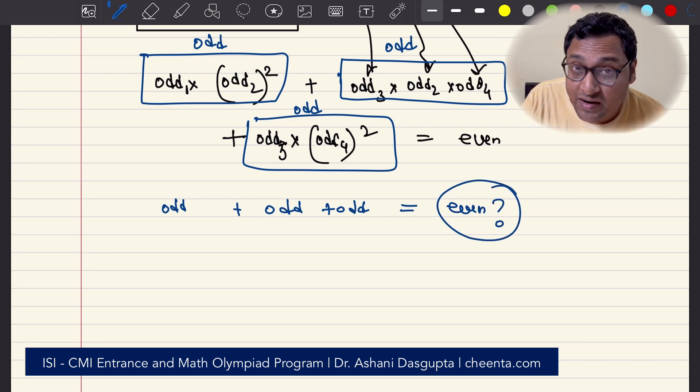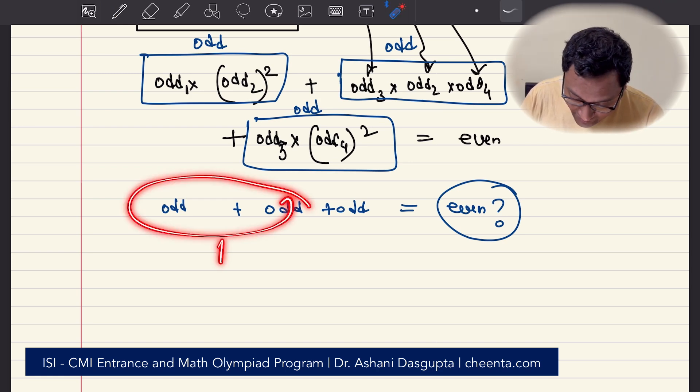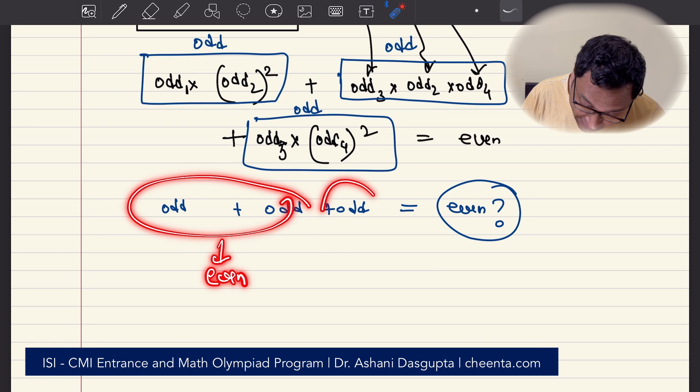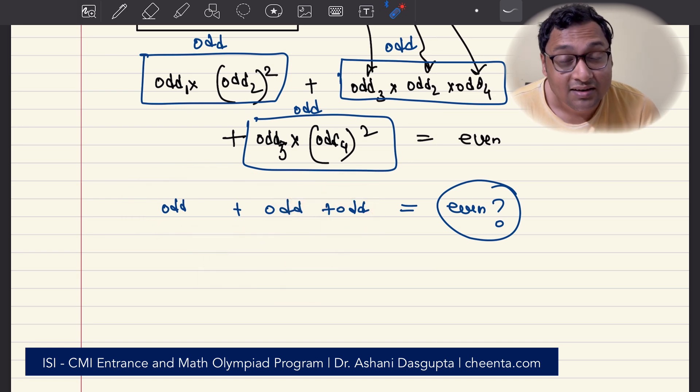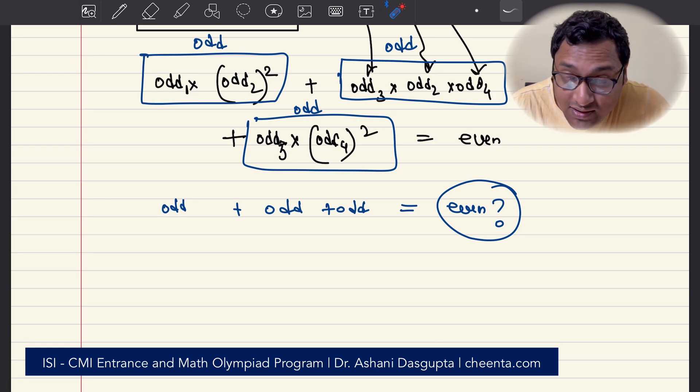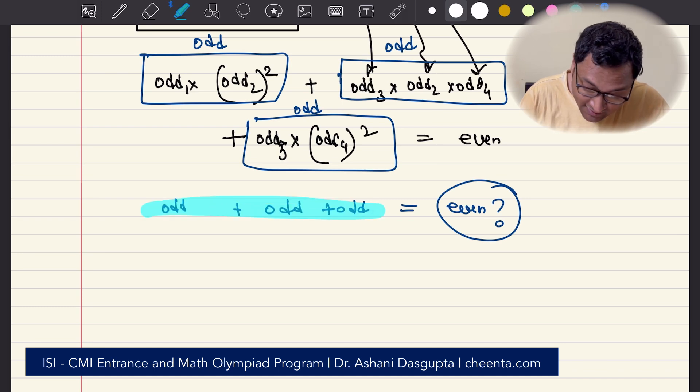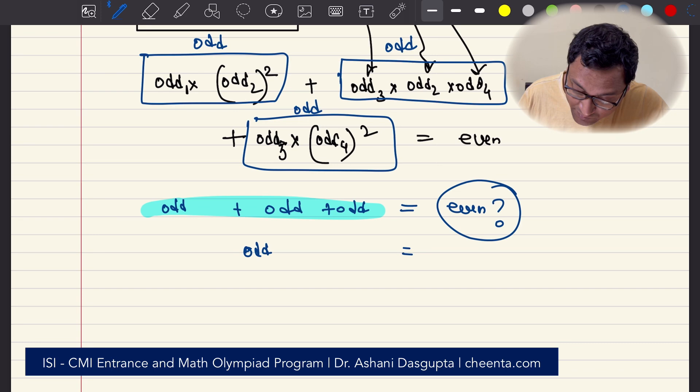It can never be an even number because if you add 2 odd numbers that will be even, if you add to that another odd number that will be odd. So if you add 3 odd numbers it will always be odd.